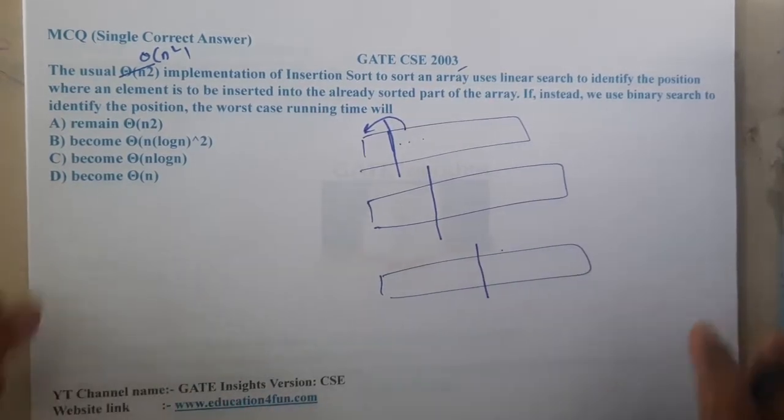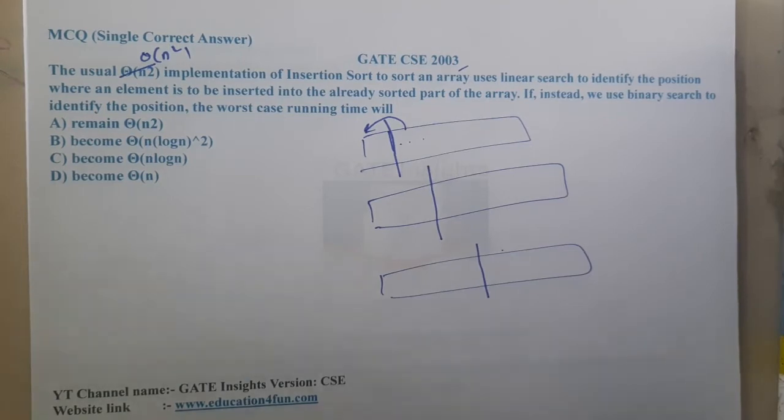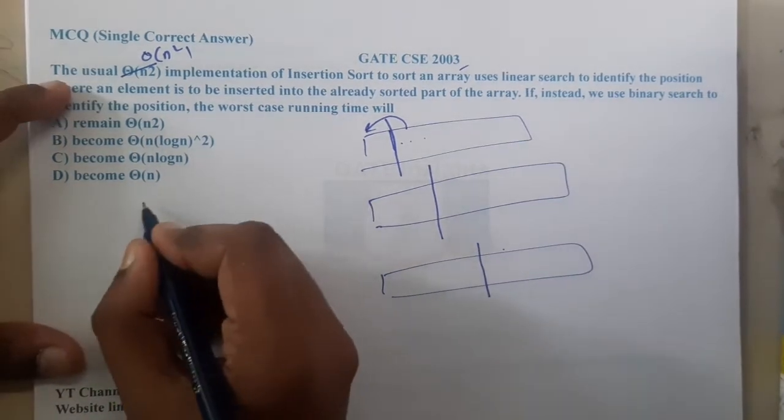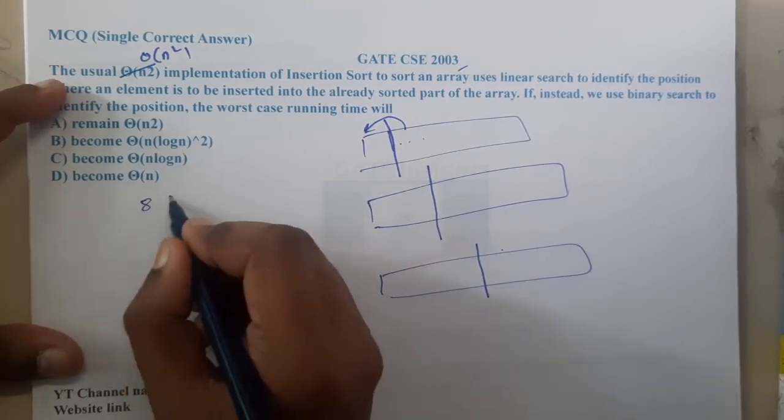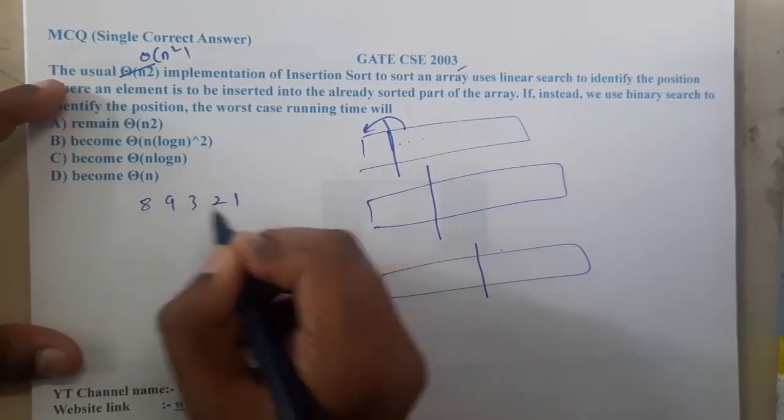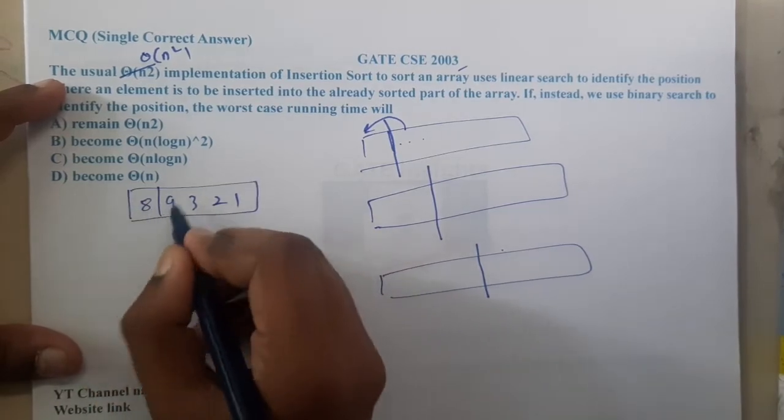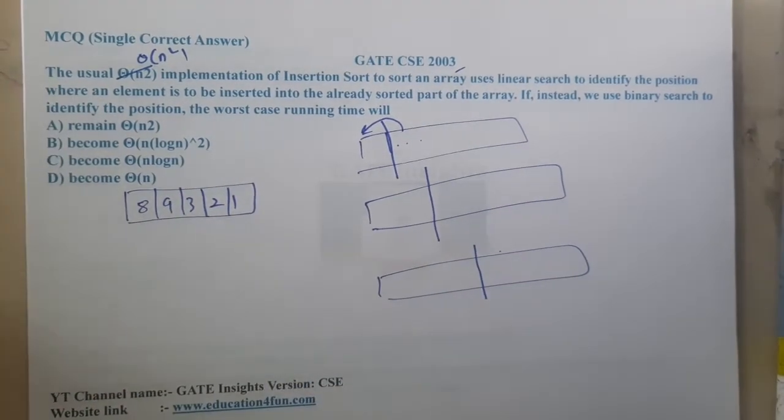But while we are searching for the element, if a few of you might be saying that we did not listen to your insertion sort lecture, please at least give us some knowledge. So let me give you what's there. Initially, let us assume our array is 8, 9, 3, 2, 1. I took a small array because I don't want to make things complex.